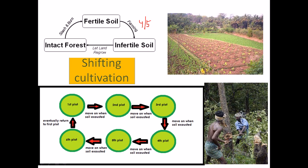Those infertile soils are no longer able to support good cultivation of crops. So in this situation, we let this infertile soil settle down for some years — we set it aside for regrowth. After some time, this soil again starts to gain its fertile activity and all the ingredients necessary for plant development.